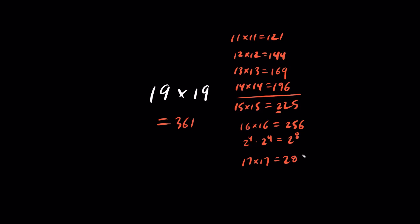17 times 17 is 289. 18 times 18, we're at the next level now, is 324. 19 times 19 is 361. And 20 times 20, it's a bit easier, is 400.